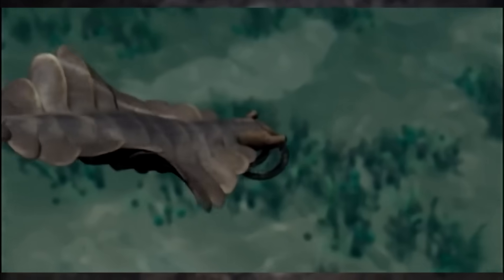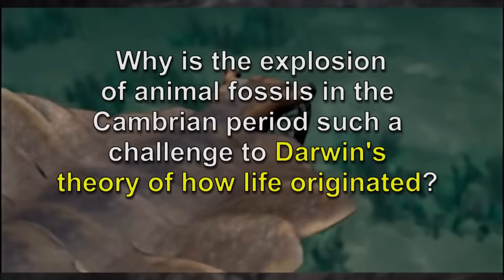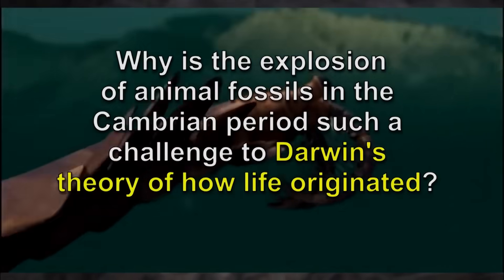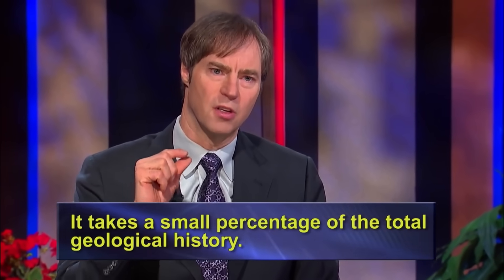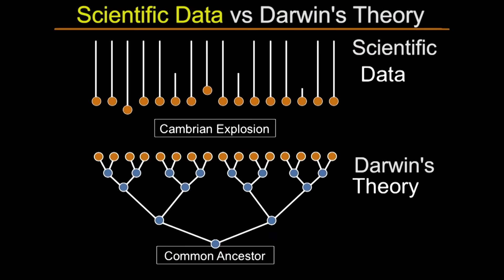You know, Stephen, what we just watched is astonishing. Why is the explosion of animal fossils on earth in the Cambrian time period such a challenge to Darwin's theory of how life originated? The abrupt appearance of animal life in the Cambrian period is really surprising for a couple of reasons. First, it takes such a small percentage of the total of geological history. You'd expect on a Darwinian basis that natural selection and random mutation would gradually produce incremental changes, with a steady increase in complexity over time. But instead, we see a very discontinuous or discrete increase confined to a very small percentage of geologic time.